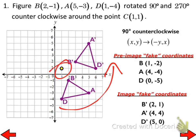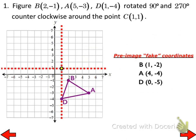Any questions about the 90-degree counterclockwise rotation? You want to leave your fake coordinate system there until you also do the 270-degree counterclockwise. Now do the same thing for a 270-degree counterclockwise rotation about the same point. We still need our pre-image fake coordinates — they're the same ones we used for the 90-degree rotation.